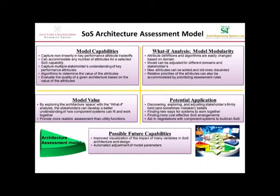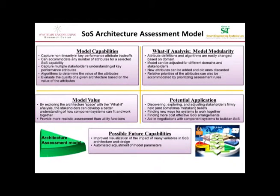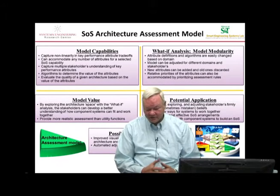And finally, it can help you with your negotiations with the stakeholders in the various systems of the system of systems to make sure you — or they — understand what part they will play and how much of their capability you need. Future possibilities for this approach include improving the visualization of the impact of these many variables. Visualization is a very important part, and if you're going to design system of systems, you should think very hard about finding a way to visualize the results. We could also put in some automatic adjustment of model parameters, though we didn't do that.